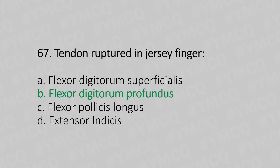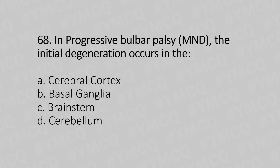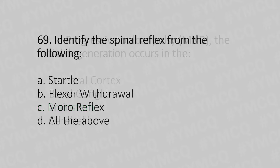Question 68: In progressive bulbar palsy, the initial degeneration occurs in — option A: cerebral cortex, option B: basal ganglia, option C: brainstem, option D: cerebellum. The answer is option C: brainstem.